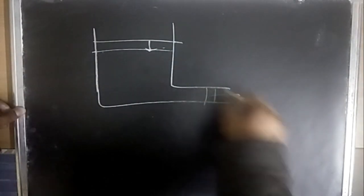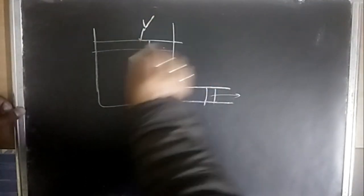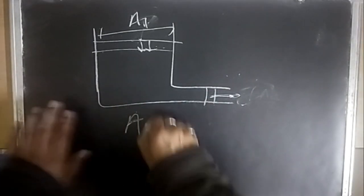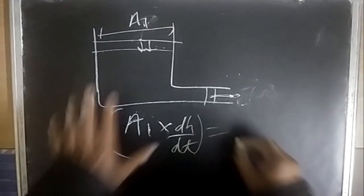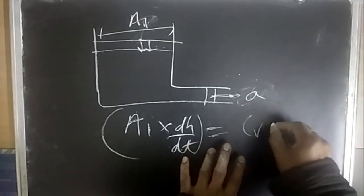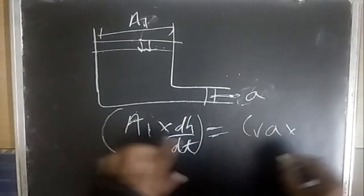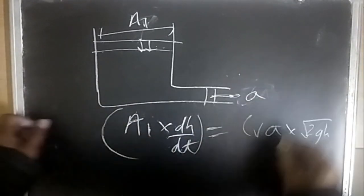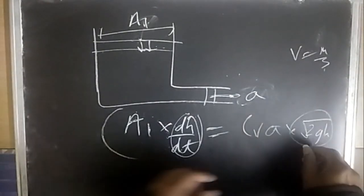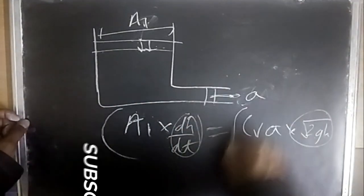For a draining tank: the volume leaving equals A1·(-dh/dt) = C_v·a·√(2gh), where A1 is the tank cross-sectional area, a is the orifice area, and h is the current head. The velocity of outflow is √(2gh). Integrating this equation gives the time required to empty the tank.